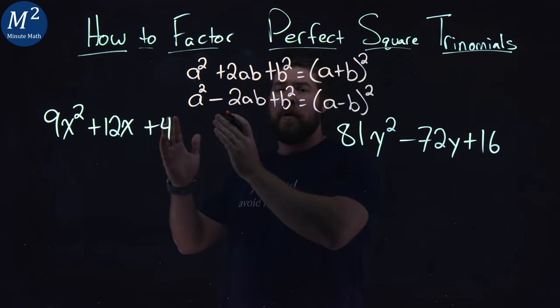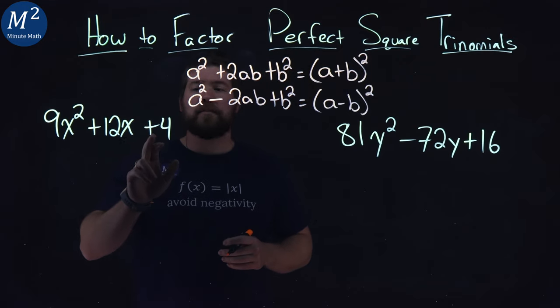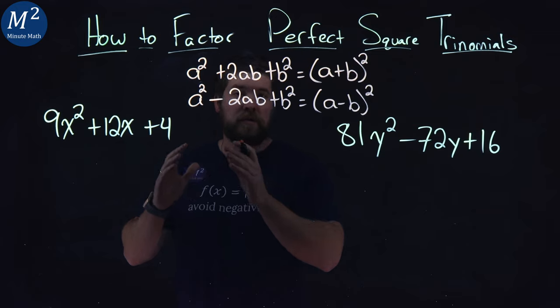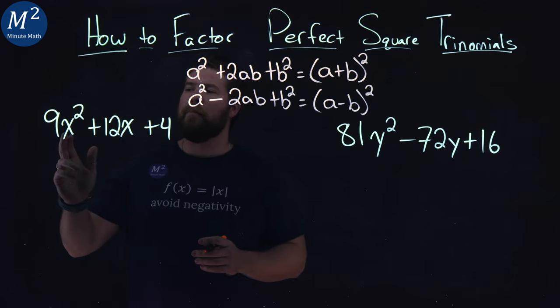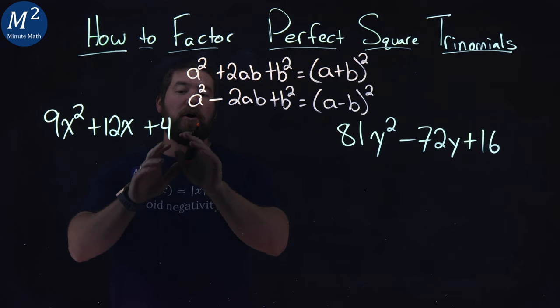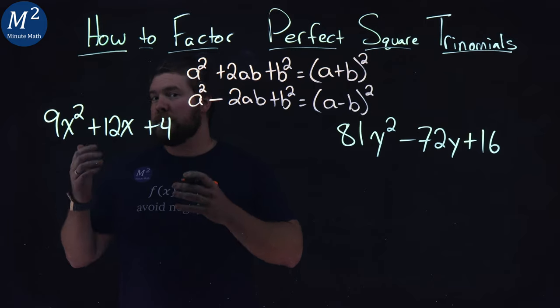Let's start with a value that's all positive. We have 9x² + 12x + 4, and we want to factor this perfect square trinomial. We first want to look at our beginning value, 9x², and our last value, the 4, and we'll see if they are perfect squares.